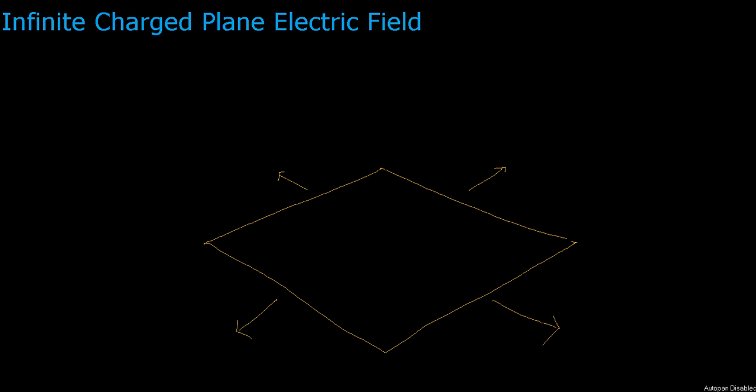Welcome everyone. In this video I'm going to try to derive a formula for the electric field at every point due to an infinitely charged plane. This will be useful for when we talk about capacitors, because capacitors are two planes, except that the parallel planes are finite. For a capacitor we can approximate the plates by an infinitely charged plane, and the formula for this infinite plane is quite remarkable because the electric field is actually constant at every point in space.